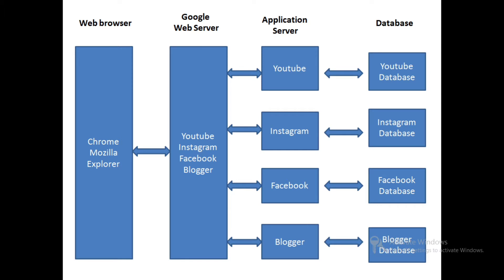We will search on YouTube. I will go to the VJ TechnoVisa channel. So what is the Google web server doing? The source of the information is sent to you. You can search on YouTube and send the request to the application server — what is available on the VJ TechnoVisa channel.